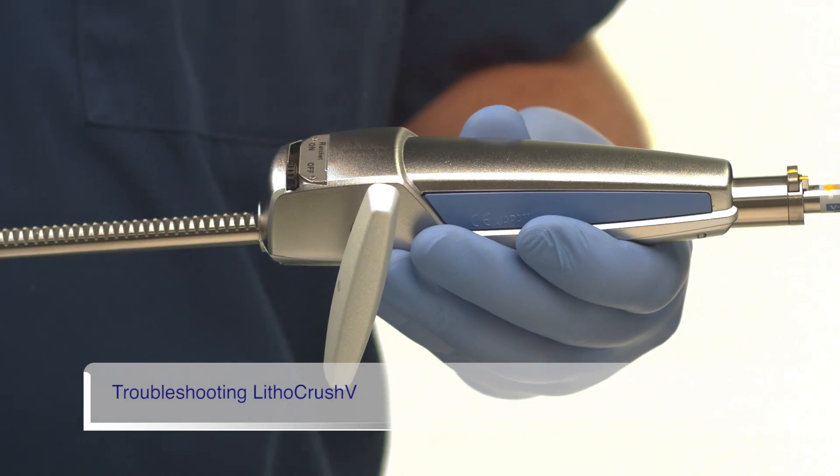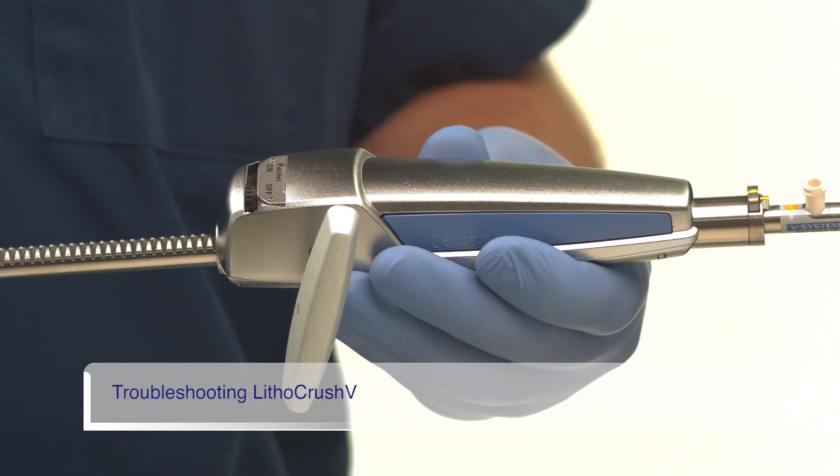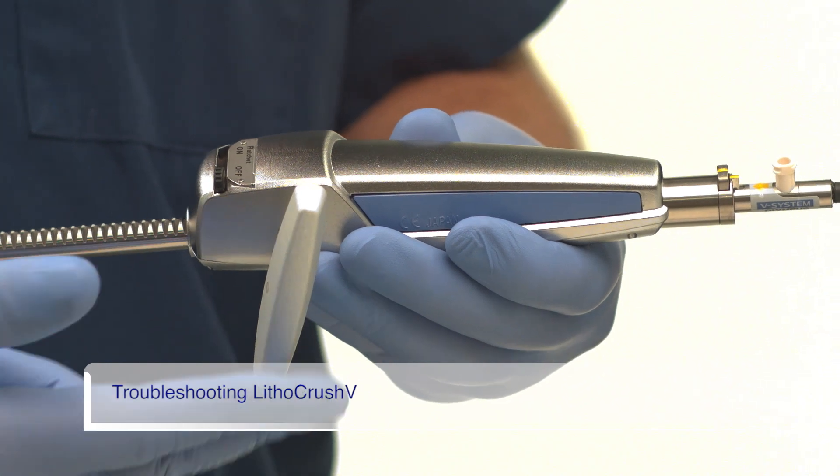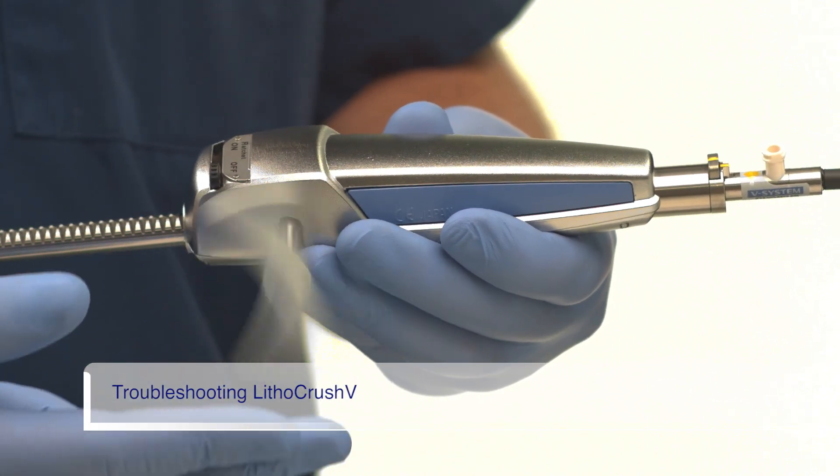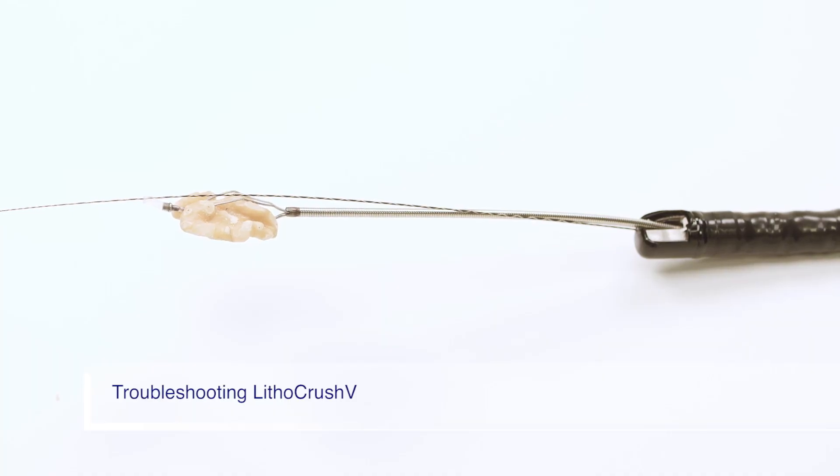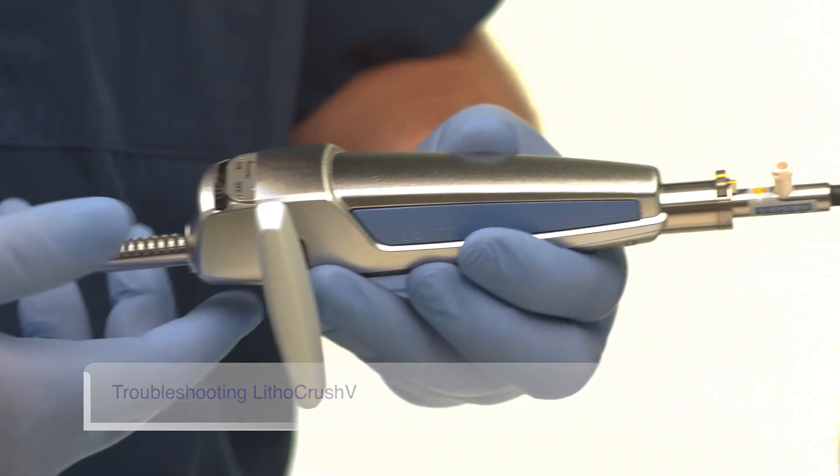In this situation, the Lithocrush V lithotriptor has broken at the handle. Notice that the handle spins freely and the basket does not contract on the fluoro image. This is because there is a break in the basket stem.